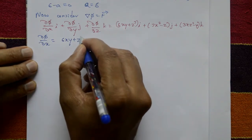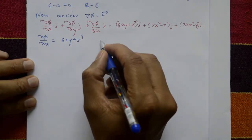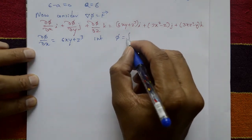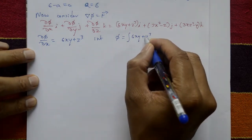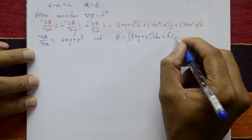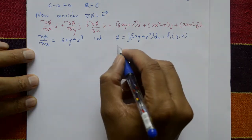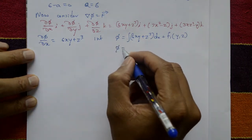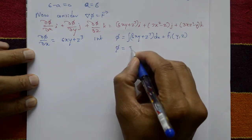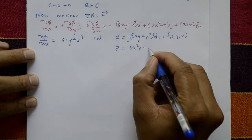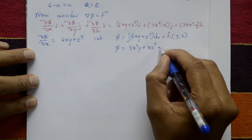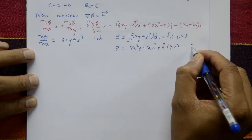Taking the coefficient of i: ∂φ/∂x = 6xy + z³. Integrating with respect to x, φ = 3x²y + xz³ + f₁(y, z), where f₁(y, z) is an arbitrary function of y and z. This is equation number one.